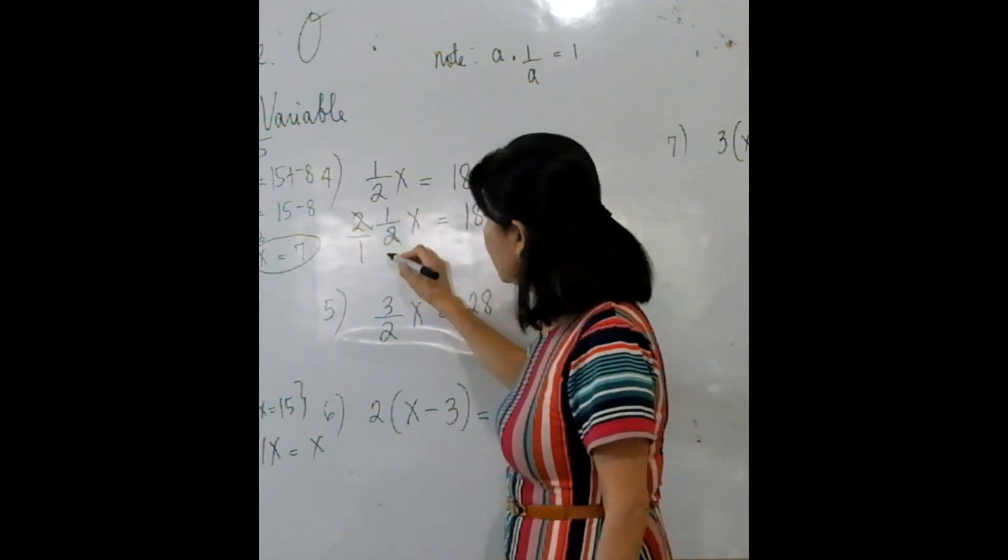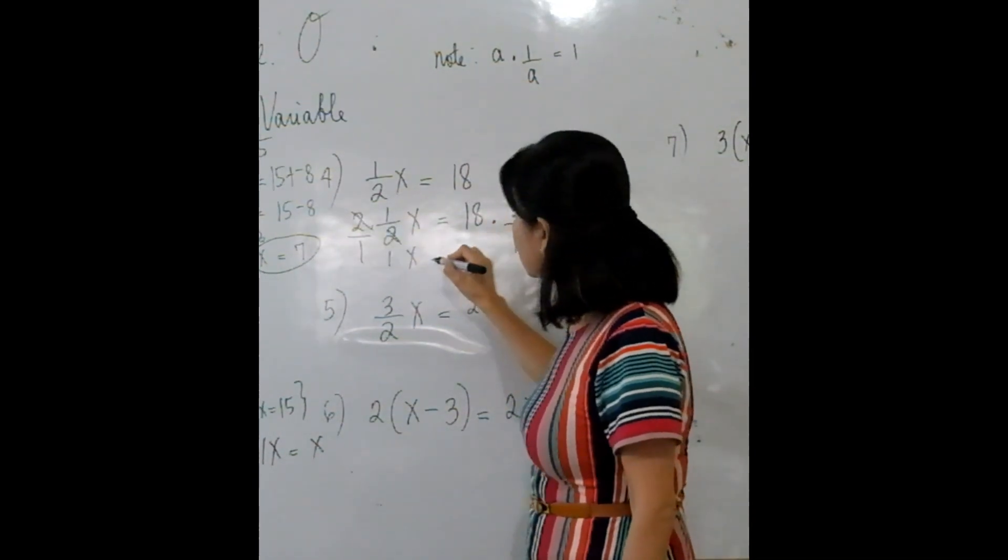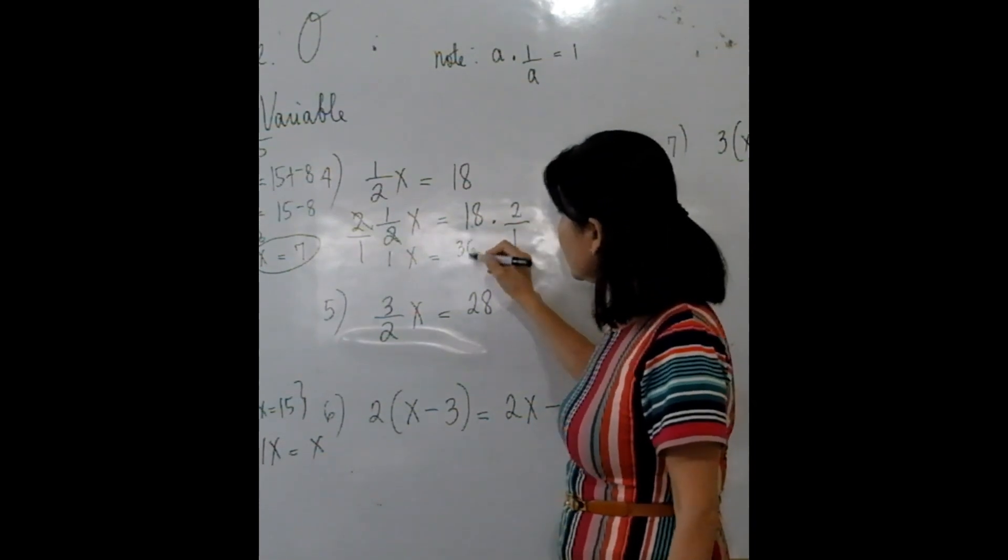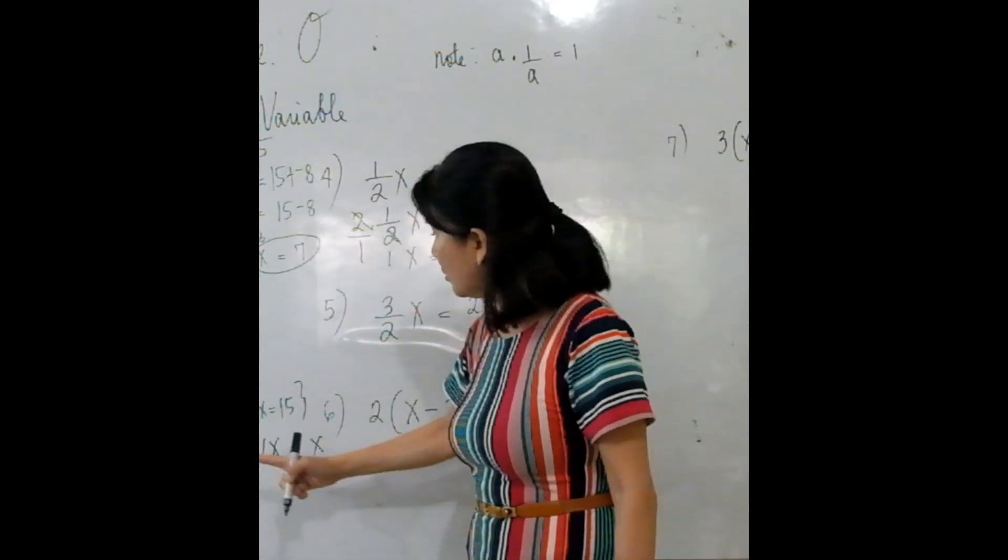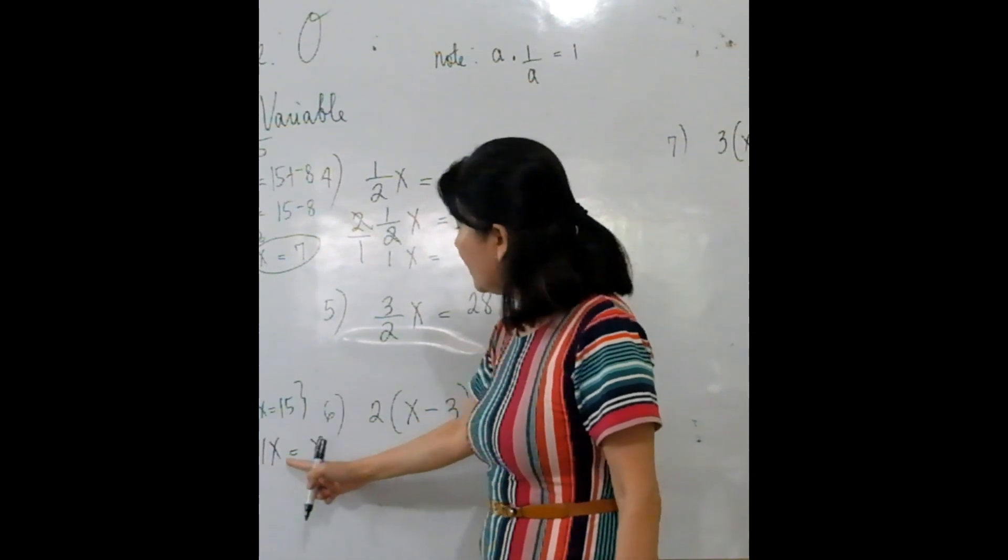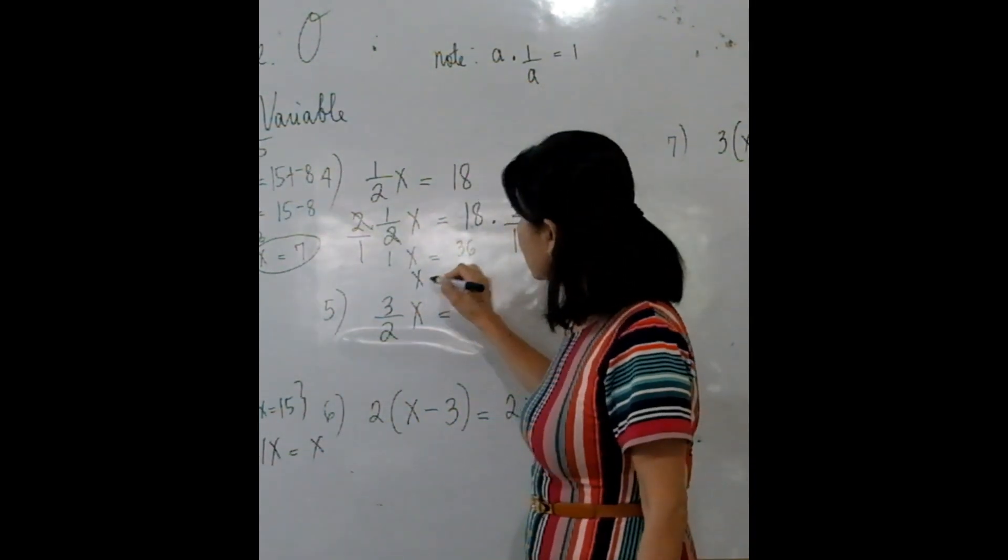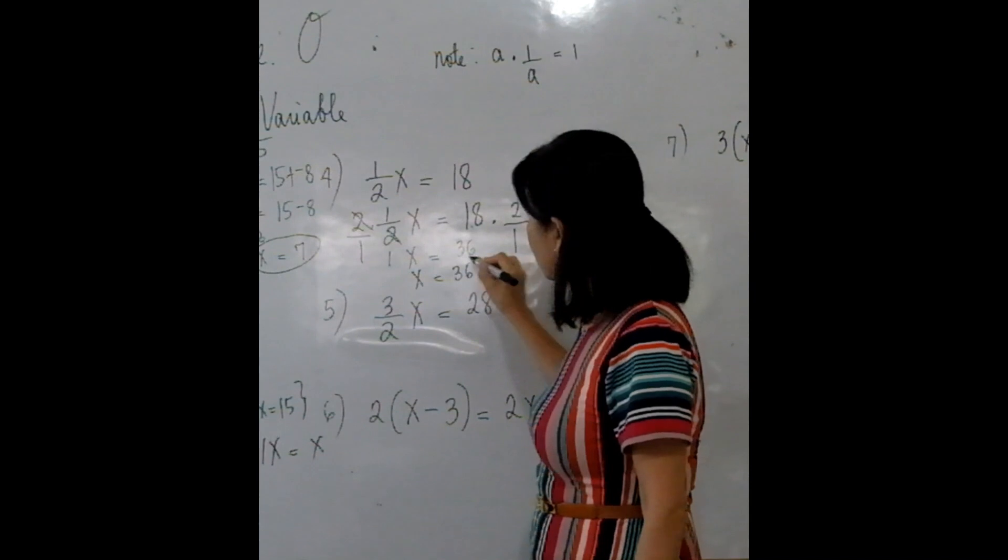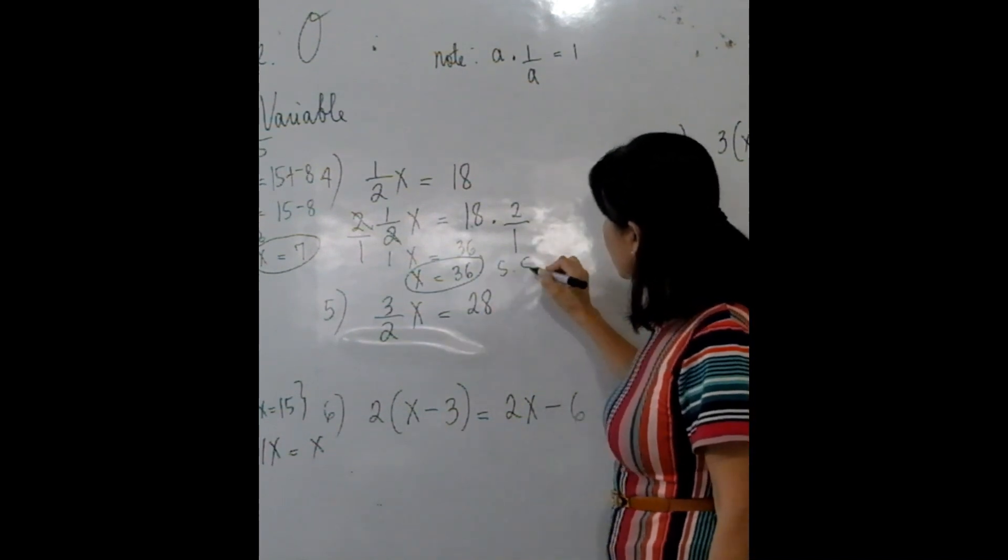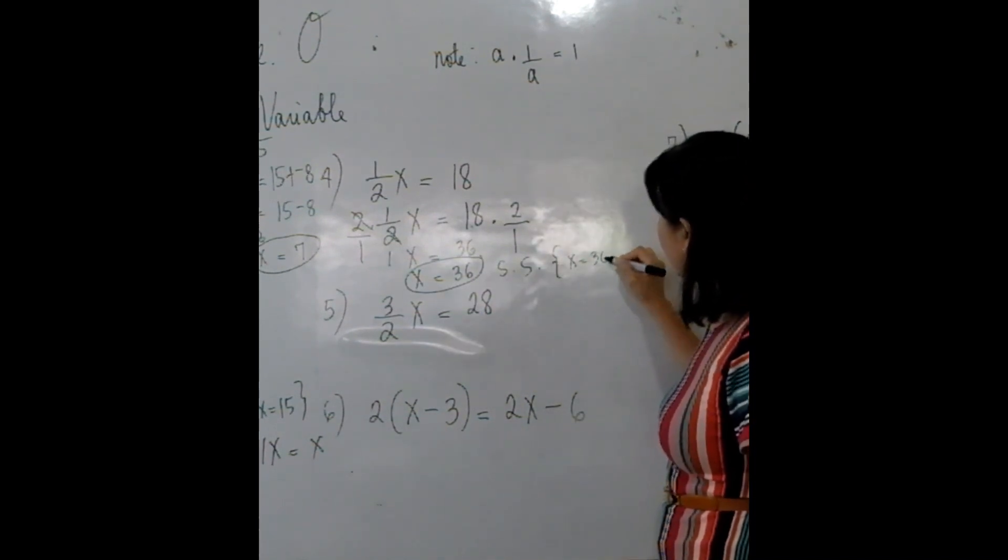So you apply it here. It gives you 1 times X equals 18 times 2 is 36. And I know that 1X is equal to X. So X = 36. And as a solution set, you just write it X = 36.